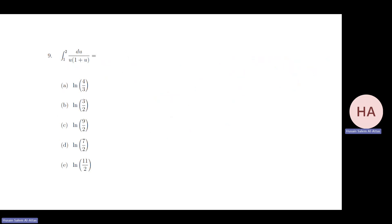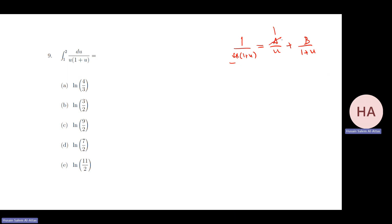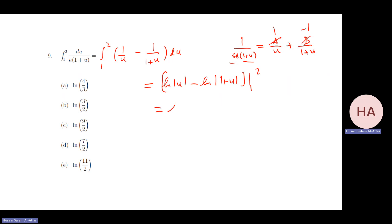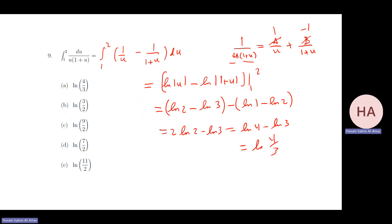Easy one: 1/(u(1+u)) = A/u + B/(1+u). Cover method: A = 1 at u = 0; B = -1 at u = -1. So the integral from 1 to 2 of [1/u - 1/(1+u)] du = [ln|u| - ln|1+u|] from 1 to 2 = (ln2 - ln3) - (0 - ln2) = 2·ln2 - ln3 = ln4 - ln3 = ln(4/3).